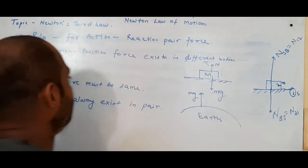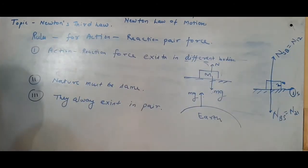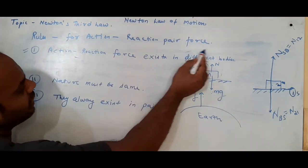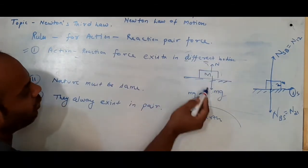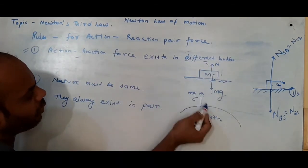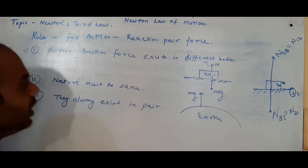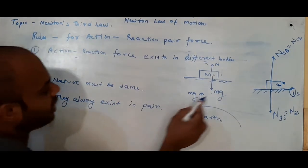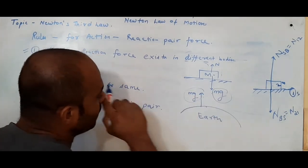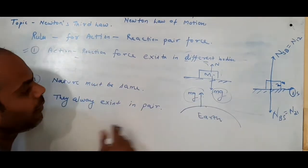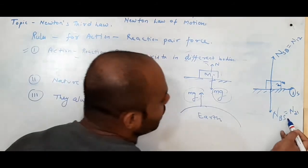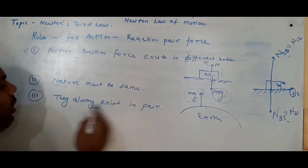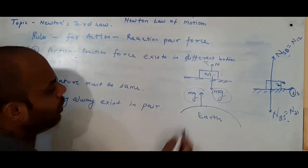So these are the three rules. First: action-reaction forces always exist in two different bodies. Second: they must be of the same nature. Third: they always exist in pairs.